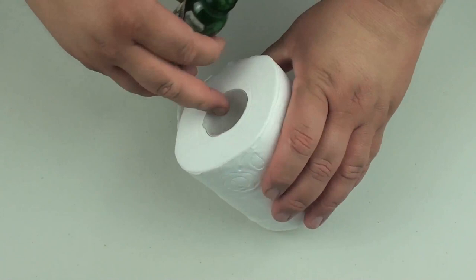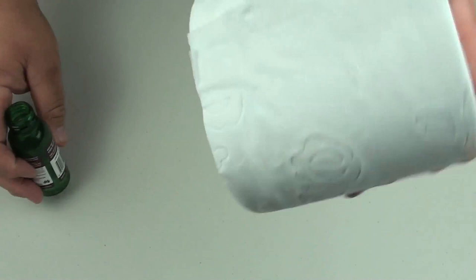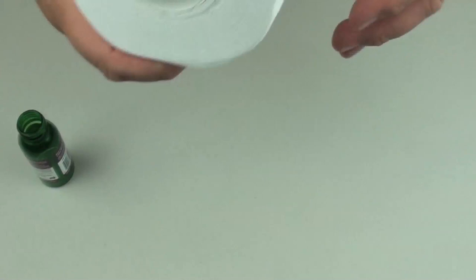And we are just going to, just on the inside of the toilet roll, put a couple of drops. You only want about two drops. Just move it around so it coats the inside, as you can see.